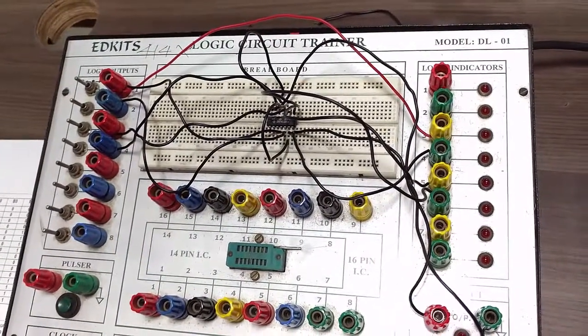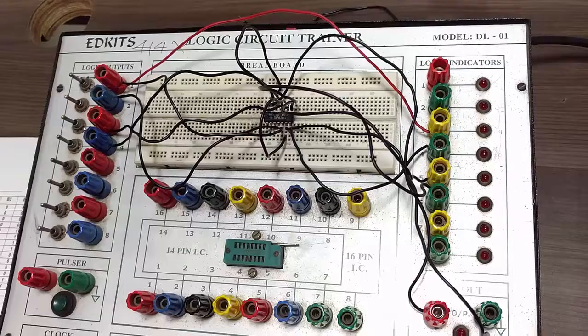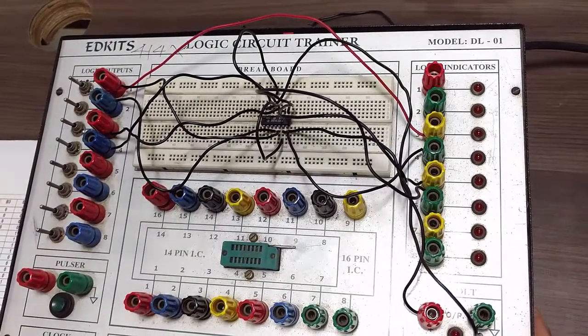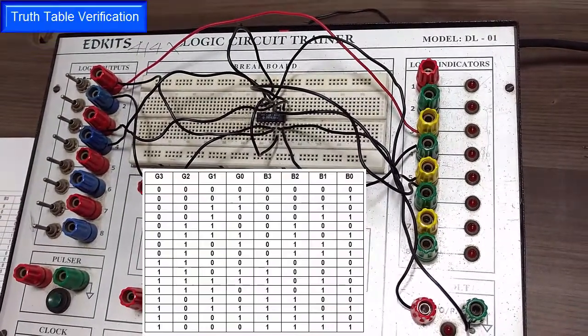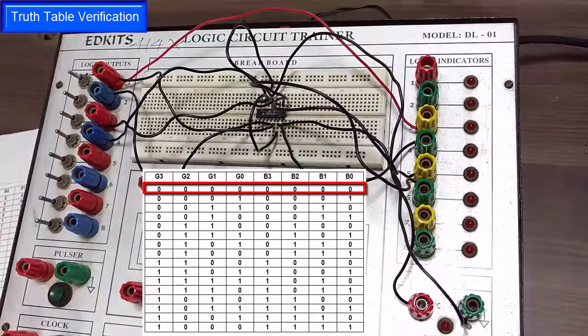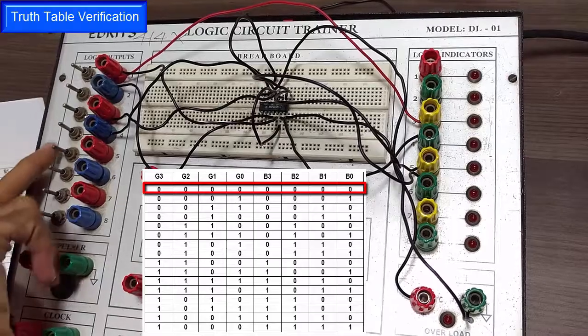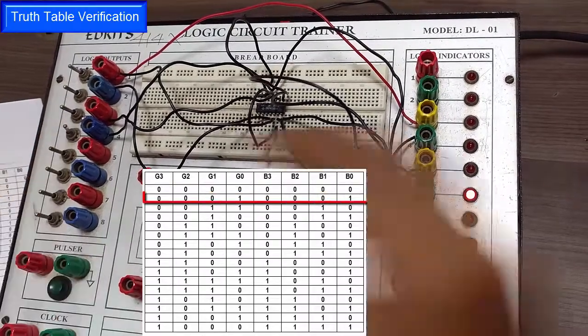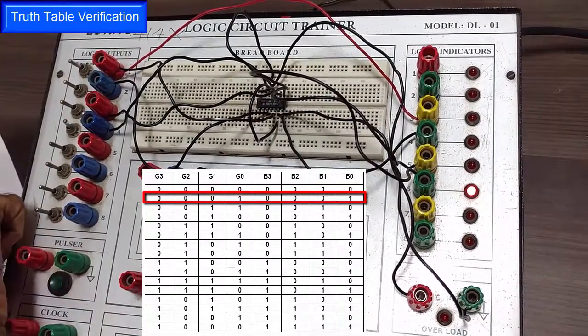So now we are done with the connection as we have discussed earlier. So now let's just verify the truth table that we have got. Let's just power it on. So now you can see as all the 4 inputs are 0, we are getting all the 4 outputs as 0. Now let's just make G0 as 1. So we are getting B0 as 1.